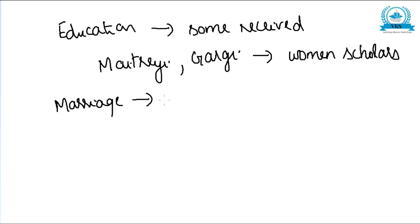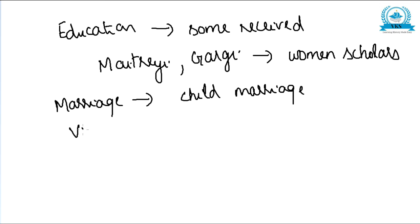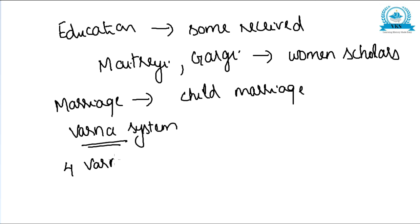The rules of marriage also underwent a great change during this time, moving towards rigidity. There were instances of child marriage. The Varna system also developed during this time, and the Later Vedic society came to be divided into four Varnas.